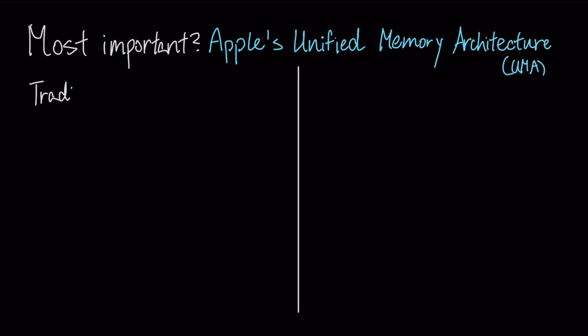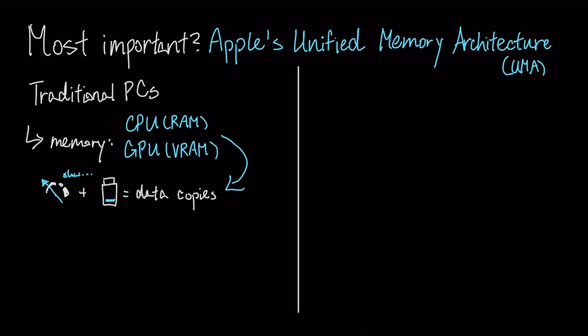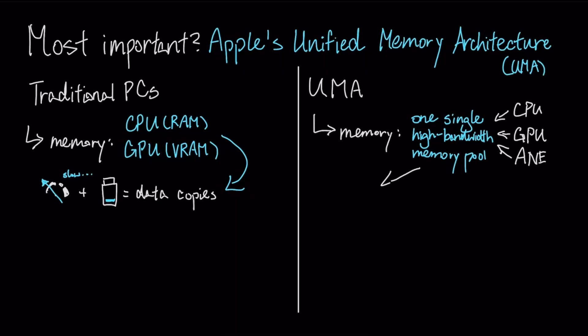Traditional PC architectures have separate memory pools for the CPU and GPU, requiring slow, power-hungry data copies across the PCIe bus. Unified memory architecture creates a single high-bandwidth memory pool accessible by all processors—CPU, GPU, and Apple Neural Engine—eliminating data duplication and creating a zero-copy advantage.